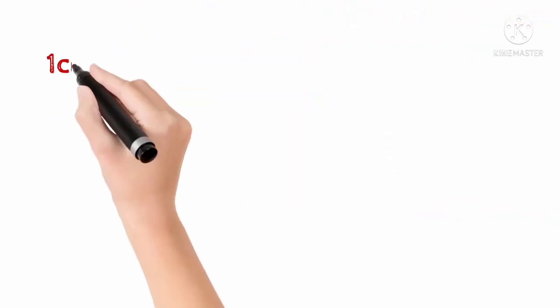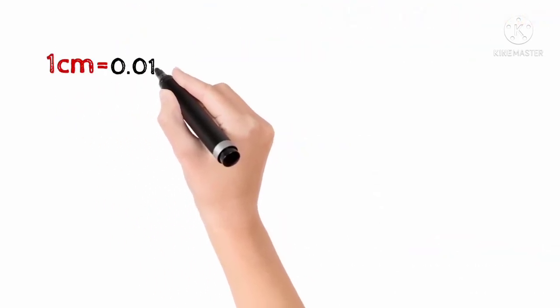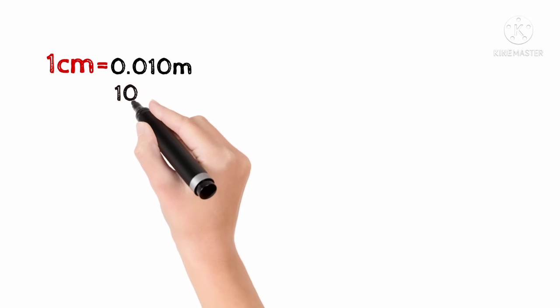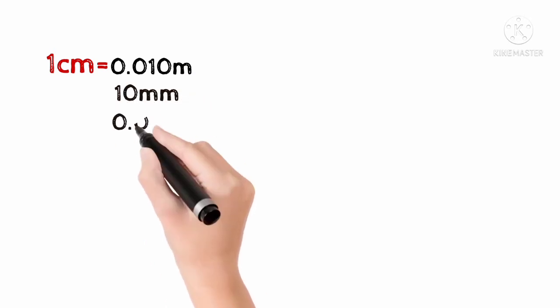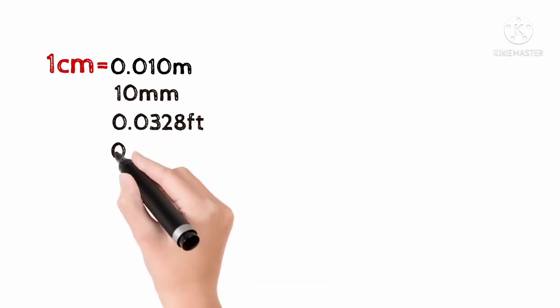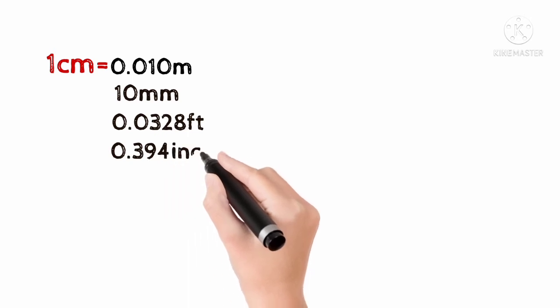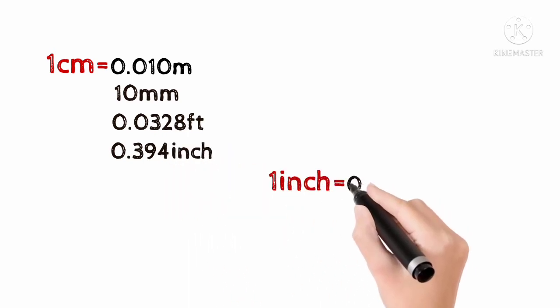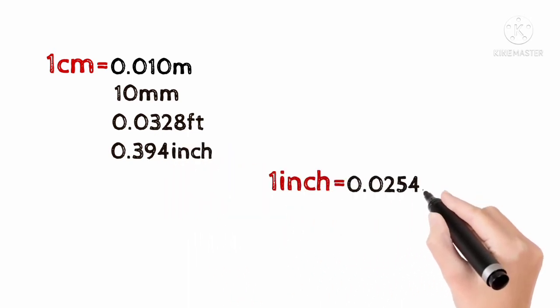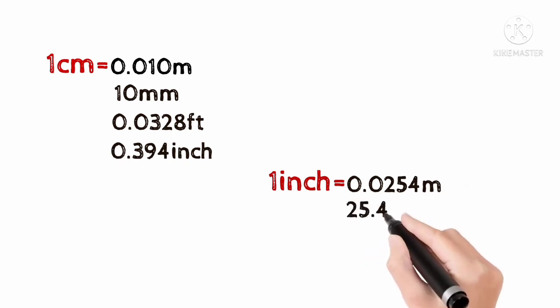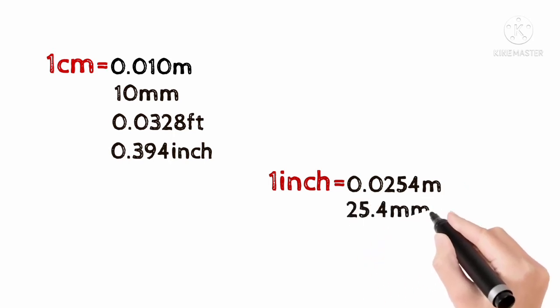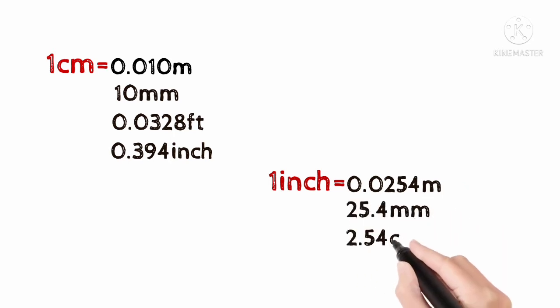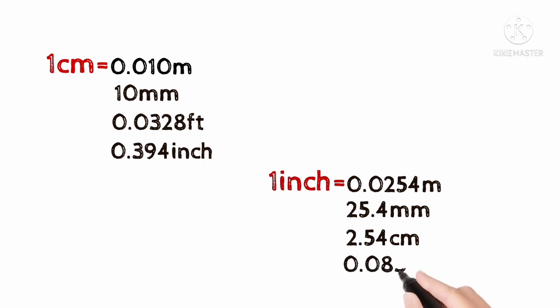1 centimeter equals 0.010 meters, 10 millimeters, 0.0328 feet, 0.394 inches. 1 inch equals 0.0254 meters, 25.4 millimeters, 2.54 centimeters, 0.083 feet.